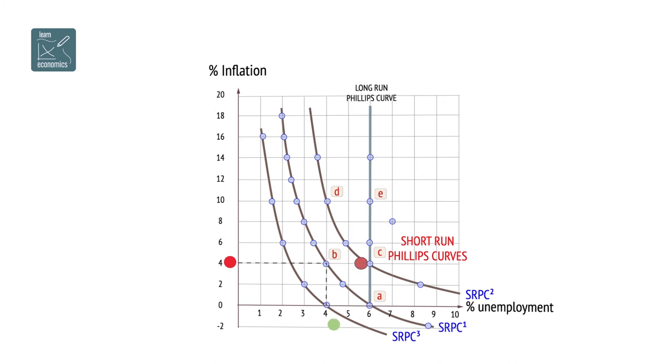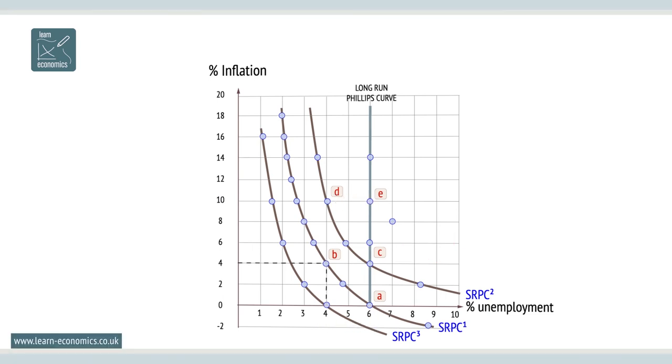Unemployment rises back to 6%, but unfortunately, inflation is now in the system. Any further attempt to reflate the economy leads to accelerating inflation as the economy moves to point D, and then E as money illusion breaks down. Fiscal policy cannot permanently reduce unemployment below the non-accelerating rate of unemployment, or NARU for short, as it leads to accelerating inflation.